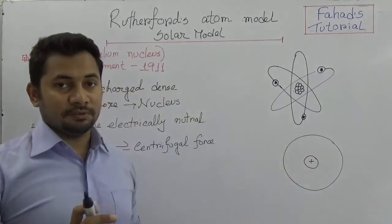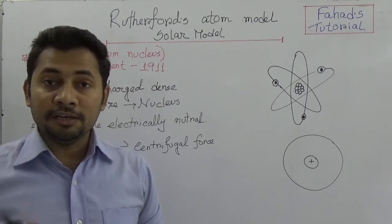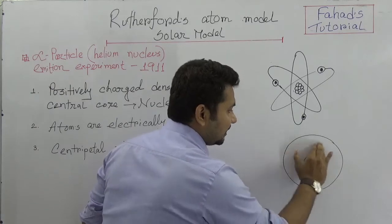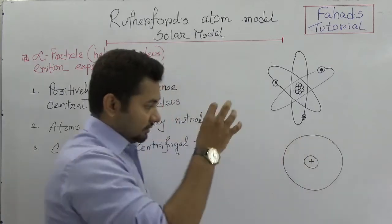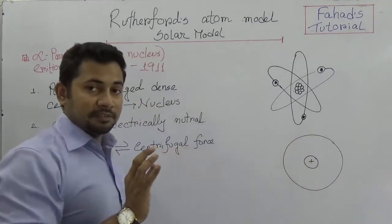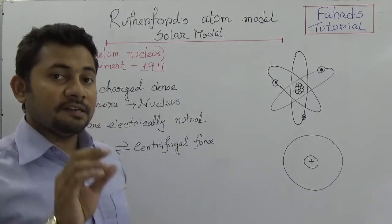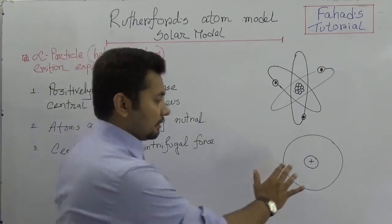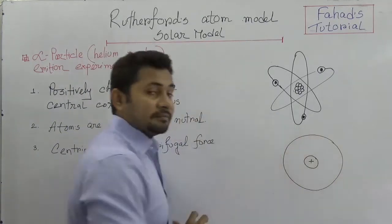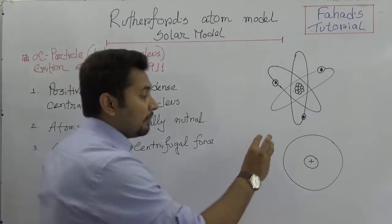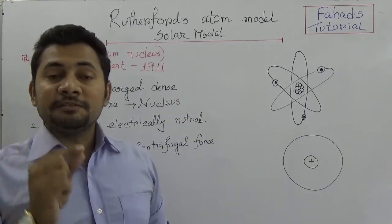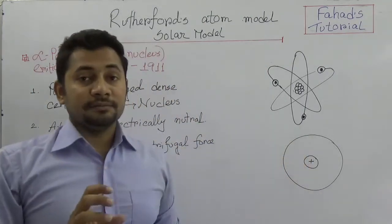That nucleus concept comes from the Rutherford Solar Model. Compared to the whole volume of the atom, the volume of the nucleus is negligible. That means most of the space inside the atom is vacant. However, the mass of the nucleus is concentrated at the core relative to the atom. So according to Rutherford's first statement, in the atom there is a densely packed central core known as the nucleus, which is positively charged.